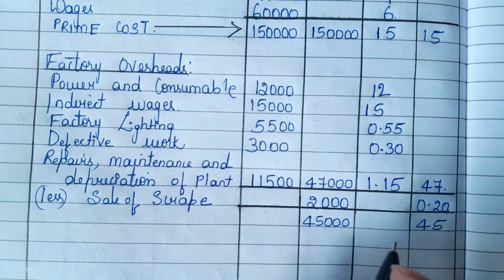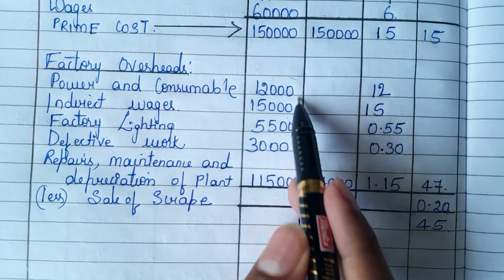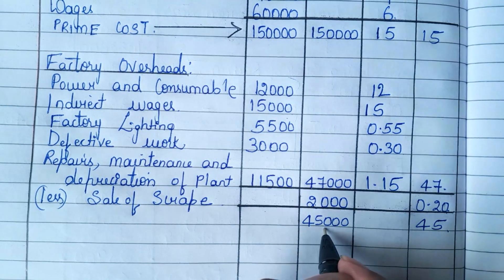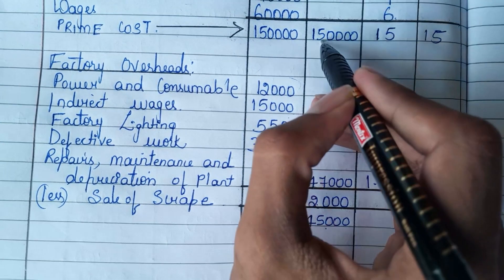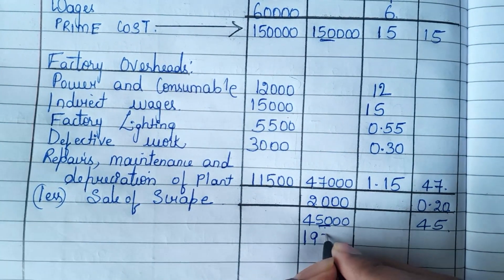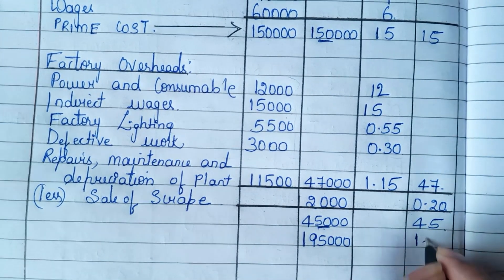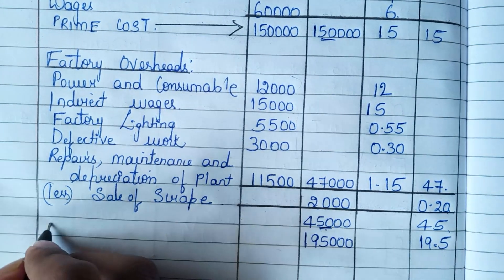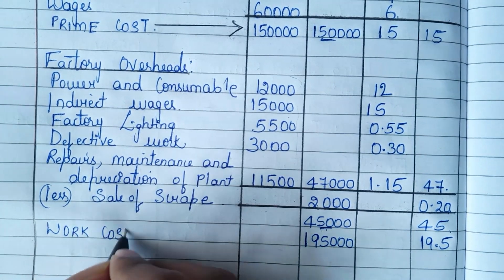This 45,000 is the total after adding all factory overheads and subtracting the 2,000 scrap. Now add 1,50,000 and 45,000. You will get 1,95,000, and here it will be 19.5 rupees. This 1,95,000 is known as work cost or factory cost.